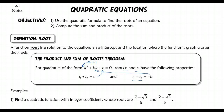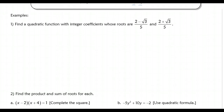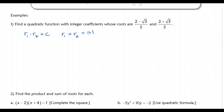So let's put that into use here. We want to find a quadratic function with integer coefficients whose roots are (2 − √3)/5 and (2 + √3)/5. Based on our product and sum of roots theorem, we know that r1 times r2 is going to equal c. We also know that if we add our two roots together, it'll equal the opposite of b. So I'm just going to go ahead and do some calculations using these as r1 and r2.